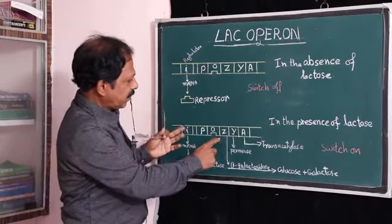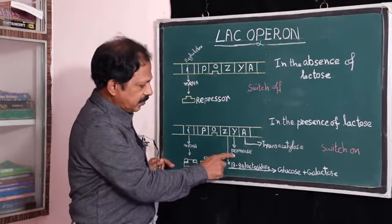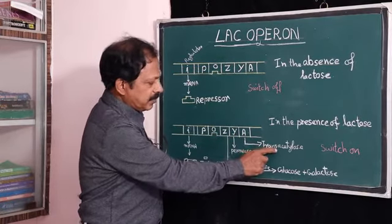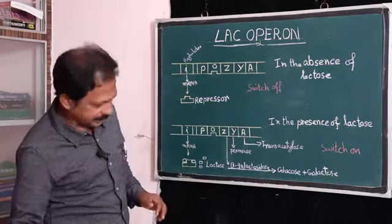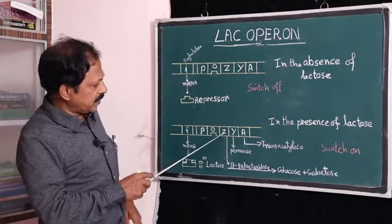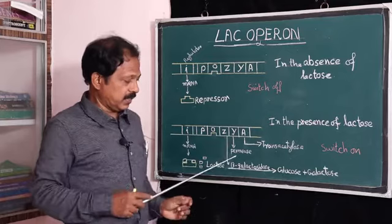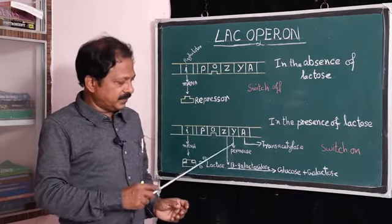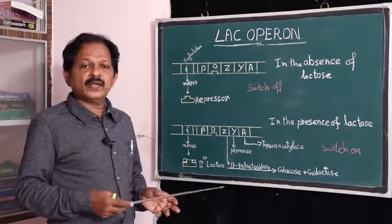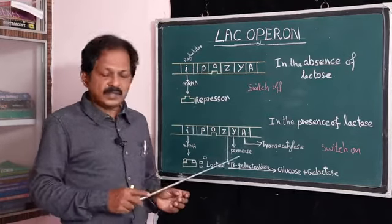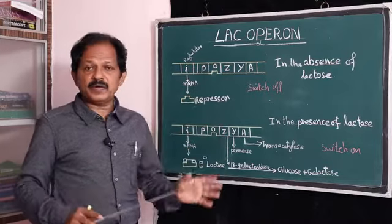The structural genes will produce specific enzymes. The Z gene will produce beta-galactosidase, the Y gene will produce permease, and the A gene will produce transacetylase. Beta-galactosidase is the principal enzyme that converts lactose into glucose and galactose. Permease will allow or permit the entry of lactose into the cell. Transacetylase's function is not yet clearly known, but it is supposed to help in the complete breakdown of lactose.